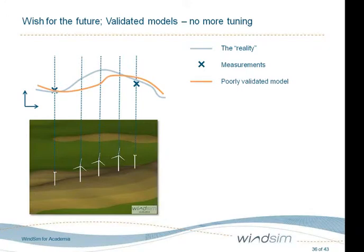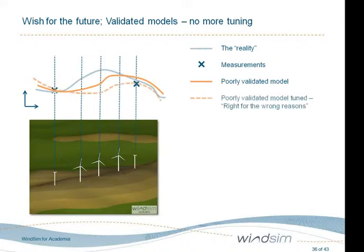When we have a poorly validated model, we might end up calibrated to fit measurements exactly at one location, and then we do our tuning — whether it's terrain elevation, roughness, or stability — there are many ways people do this tuning to reproduce measurements. But of course we have a non-linear system, so tuning might take us away from reality. This is really not a good practice. Our dream is to have good models where we don't have to tune. We solve a non-linear problem, so it is natural that we need to use a non-linear method.